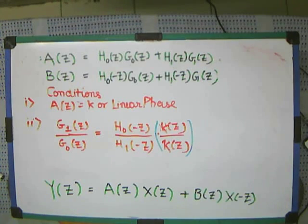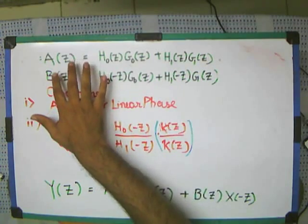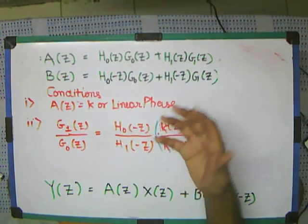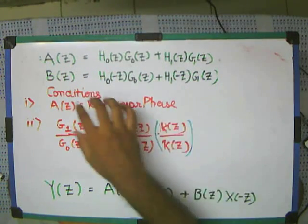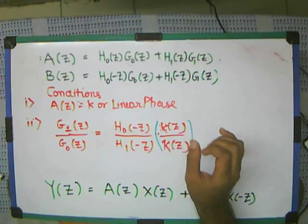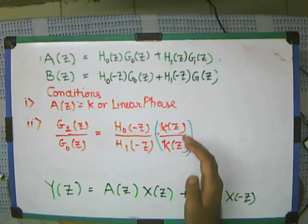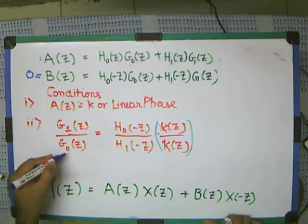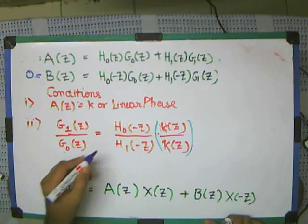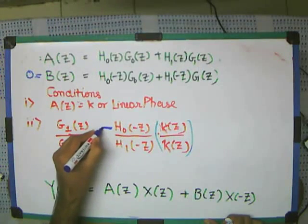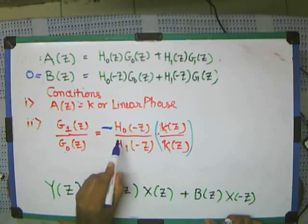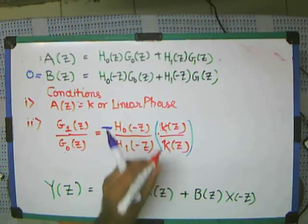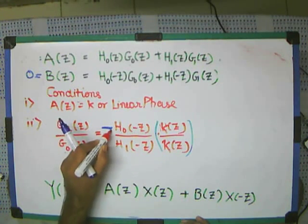By the previous lecture, we understood that A(z) has to be some constant — in other words, from the linear phase system. And B(z) has to be equal to zero. This has to be equal to zero, or in other words, t1 upon g0 has to be minus of h0 upon h1.